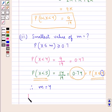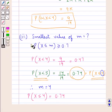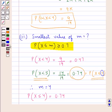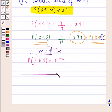As P(X ≤ 4) = 0.74 satisfies the condition that P(X ≤ m) ≥ 0.7, the value of m is 4. This completes the session. Hope you have understood the solution of this question.